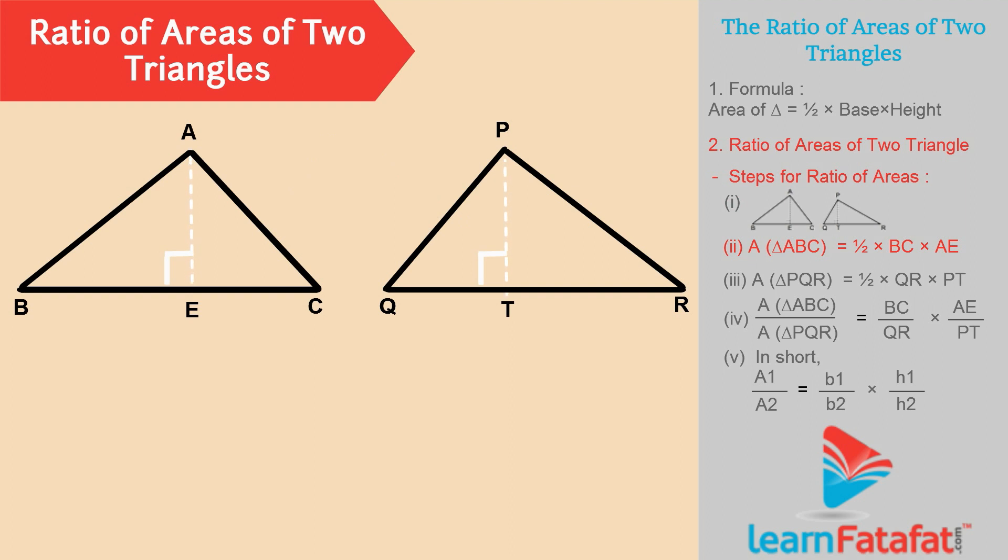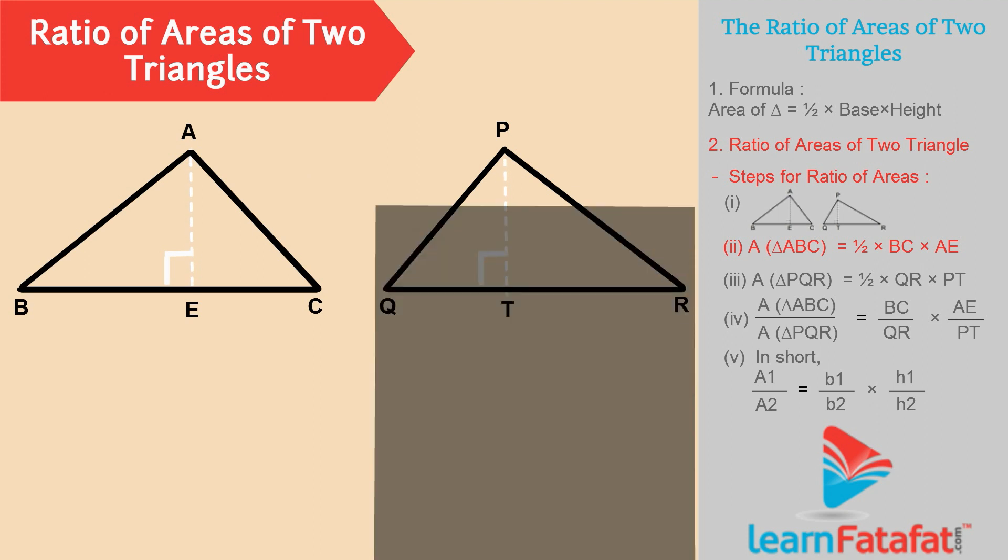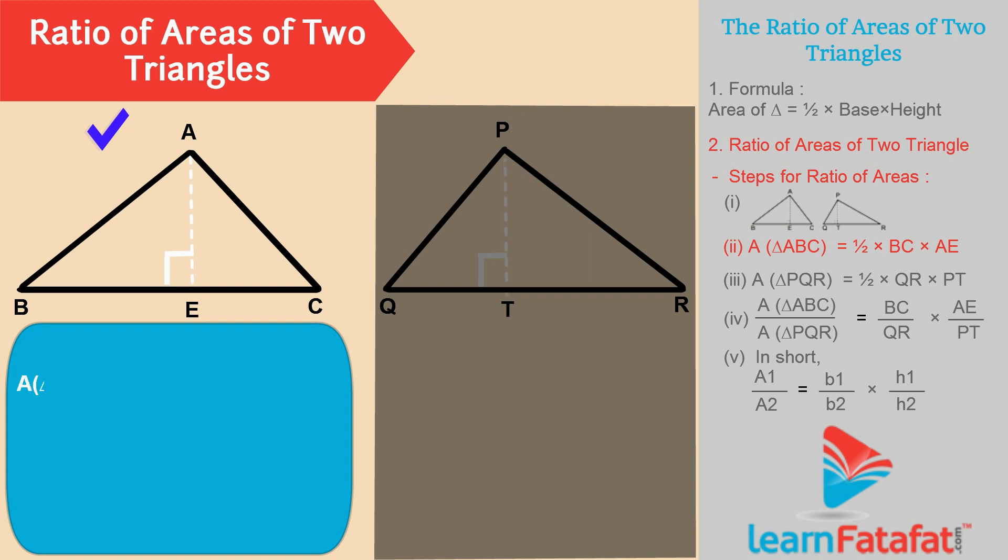Now, we will find area of individual triangle. For triangle ABC, we have area of triangle ABC is equal to half into base into height which is equal to half into BC into AE.